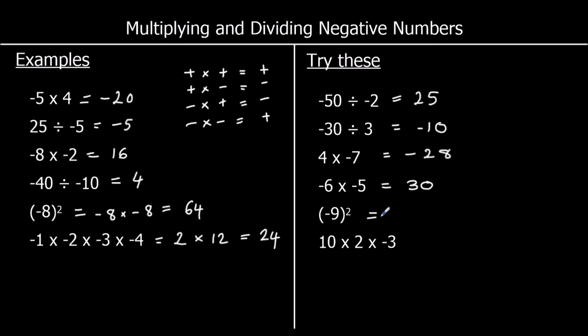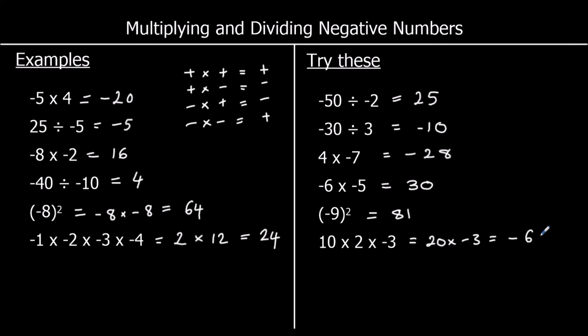Negative 9 squared — negative times a negative is positive, and 9 nines are 81. And we've got 10 times 2 times negative 3. 10 times 2 is 20, so 20 times negative 3 — that's a positive times a negative, so negative. 20 times 3 is 60, so negative 60.